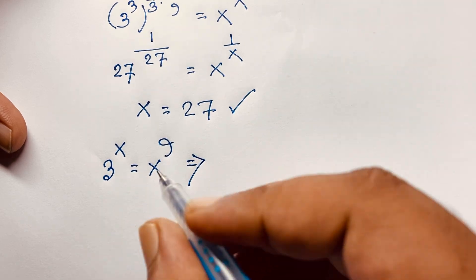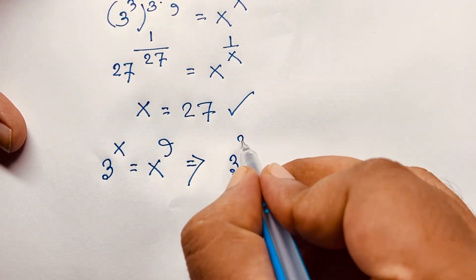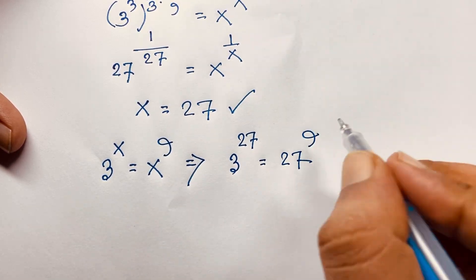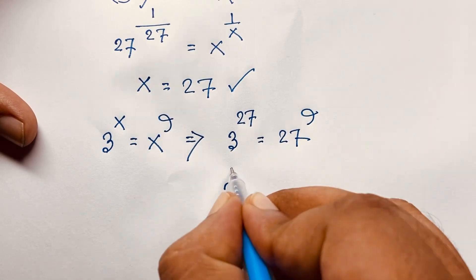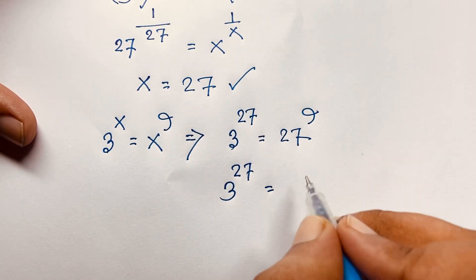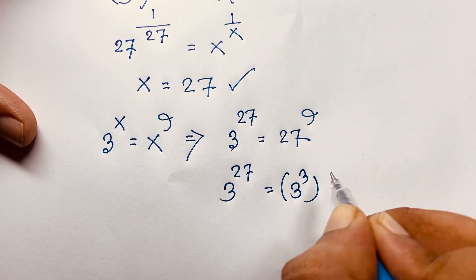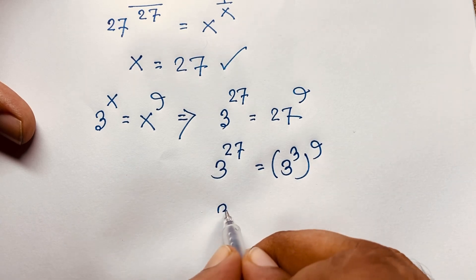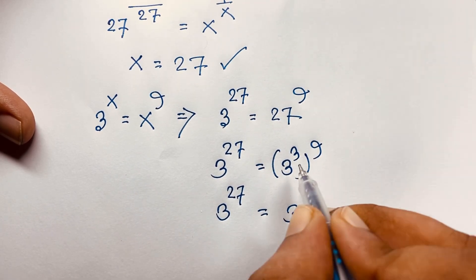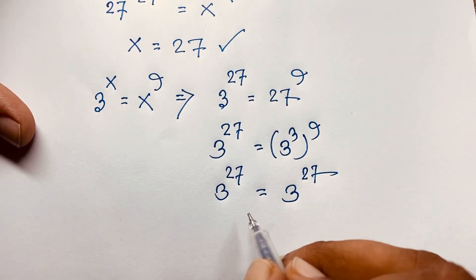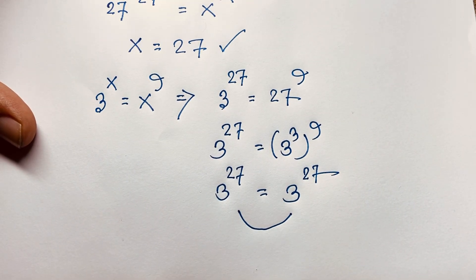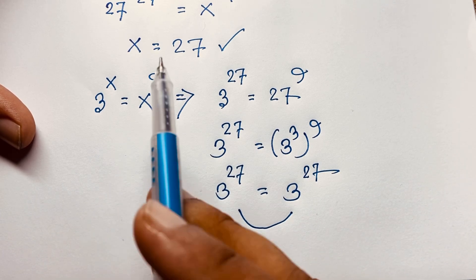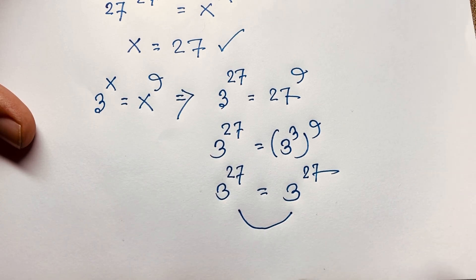Substituting x equals 27: the left-hand side is 3 to the power 27. The right-hand side is 27 to the power 9, which equals 3 to the power 3, bracket to the power 9. That gives 3 to the power 3 times 9, which equals 3 to the power 27. So the left-hand side and right-hand side are both equal, confirming that x equals 27 is our correct answer — this is the value of x in this exponential math problem.